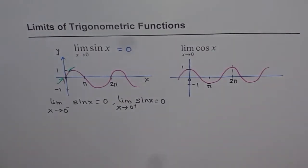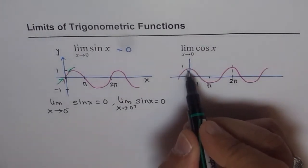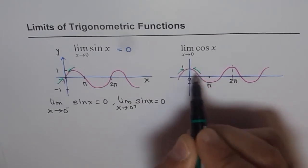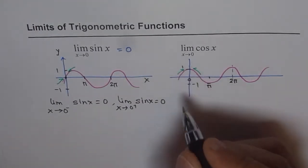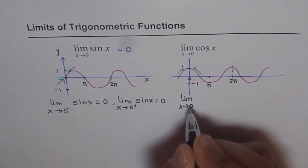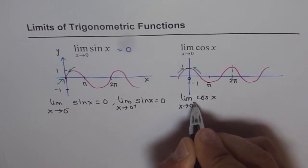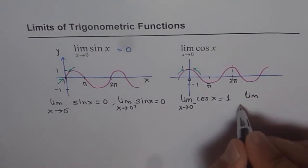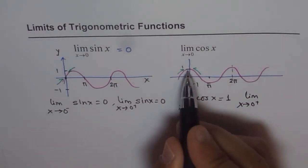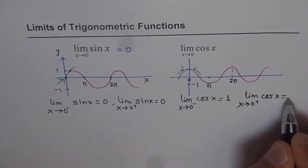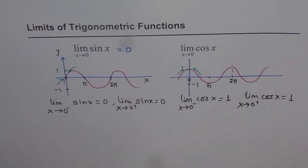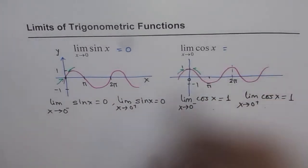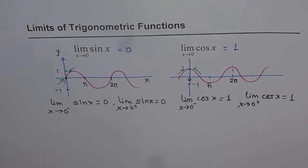Now let's do the same analysis for cosine x. As you approach 0 from the left side, you approach a value of 1. From the right side, you also approach the value of 1. So the limit of cosine x as x approaches 0 from the left equals 1, and from the right also equals 1. Since both limits are equal, the limit of cosine x as x approaches 0 is 1.